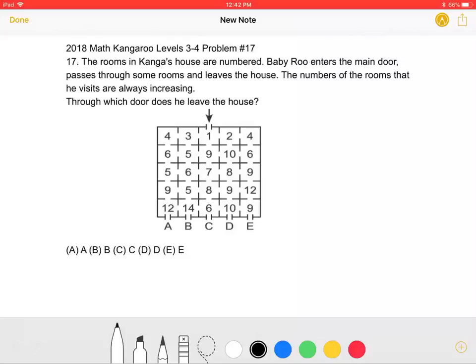The 2018 Math Kangaroo Levels 3-4 Problem Number 17. The rooms in Kanga's house are numbered. Baby Roo enters the main door, passes through some rooms, and leaves the house. The numbers of the rooms that he visits are always increasing. Through which door does he leave the house?